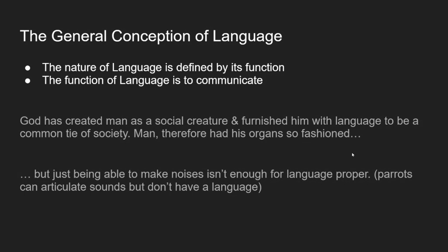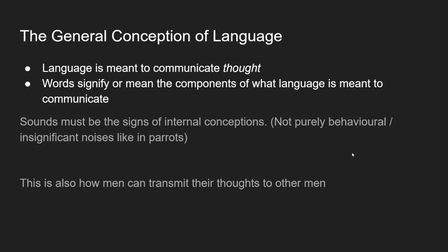Locke goes on to say that just being able to make noises — as our organs can, which God has given us — isn't enough for language proper. Parrots can articulate sounds but they don't have a language. As far as Locke's argumentation is concerned, we're taking human language as our explanandum and saying that whatever it is that animals have isn't the same as what we have. The function of language then is to communicate — that's the role language fulfills for us as social creatures.